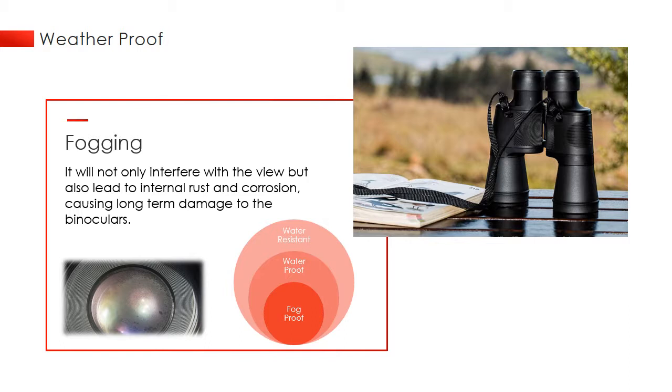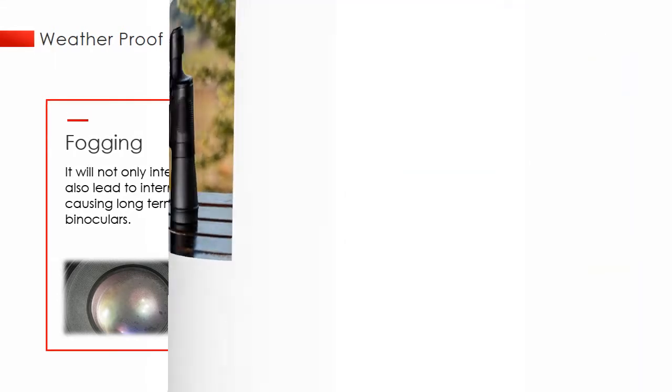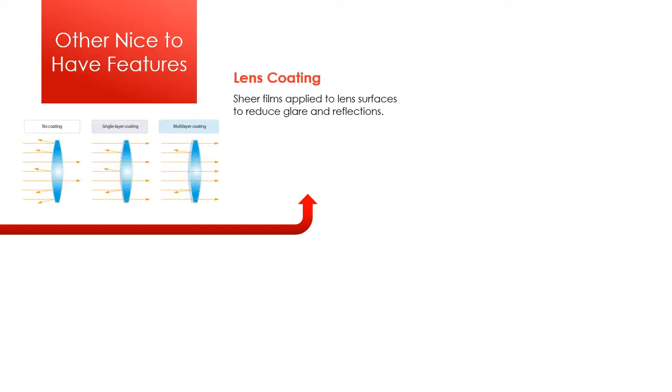There are other features of binoculars you may consider. Some binoculars have lenses coated with films to reduce glare and reflections. Fully coated means both inner and outer surfaces of the lens are coated. Multi-coat means there are multiple layers of anti-reflective coatings.